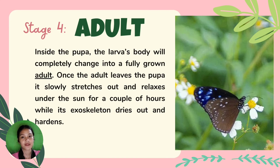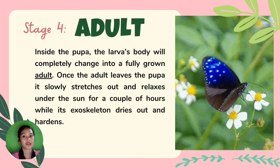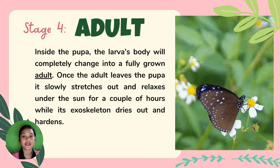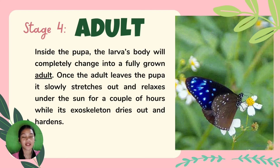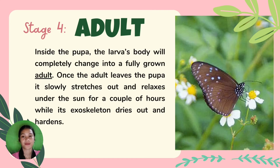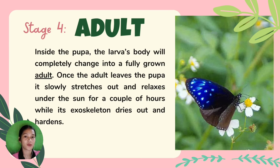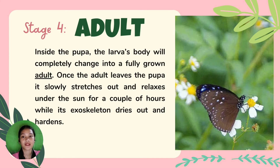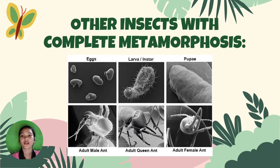And the last stage is adult. When the butterfly is ready to emerge, the case around the pupa splits open. The wings are wet, soft, and wrinkled against its body. The butterfly has to wait for its wings to dry and pumps a liquid called hemolymph into them.